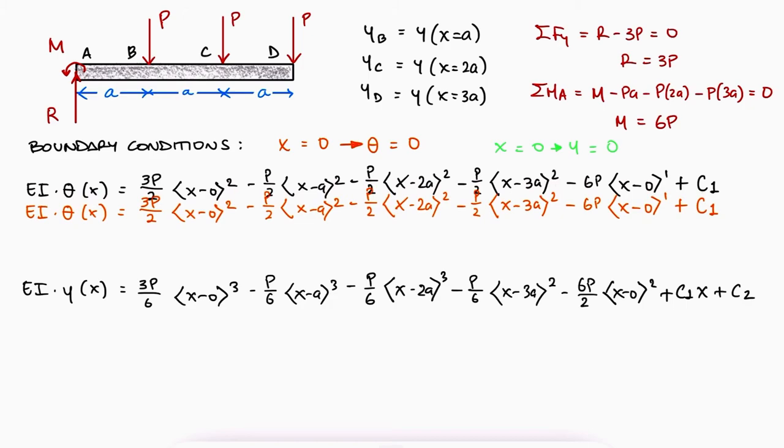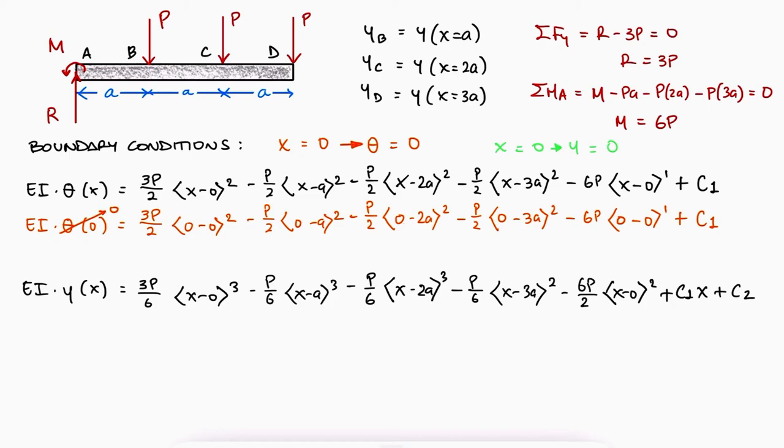Using the boundary condition in the slope equation means substituting both x and theta of x with 0. We know that the brackets that have a negative value within them will make the function 0, just like it was explained during the main video linked below, and therefore C1 is equal to 0.